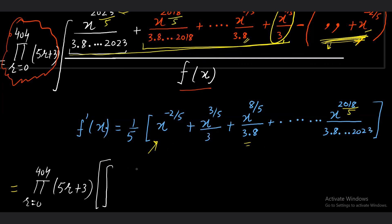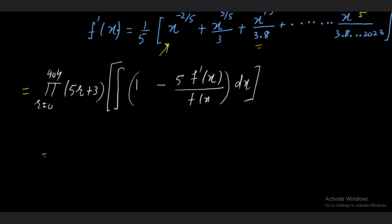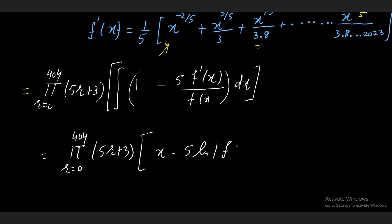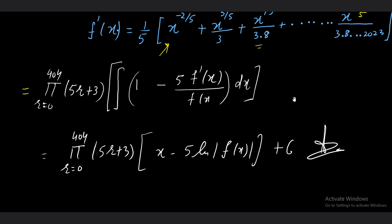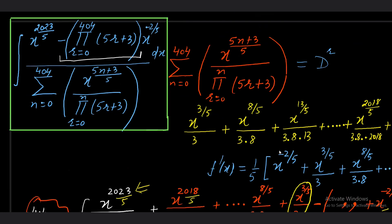So the first term is f(x) upon f(x) = 1, and the second term is 5·f'(x) upon f(x), and then dx. This is now easy to integrate. The final answer, with the constant out front being the product π(r) from r=0 to 4 of (5r+3), is: x − 5·ln|f(x)| + C. That is our answer. Hope you enjoyed this — the question looks big but it is not that tough, you just have to observe things nicely.